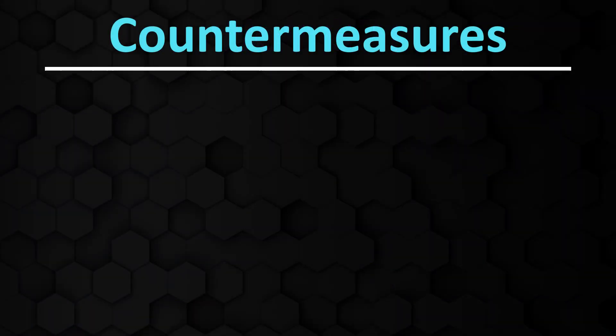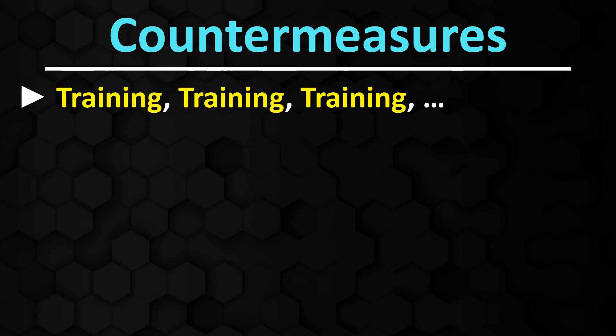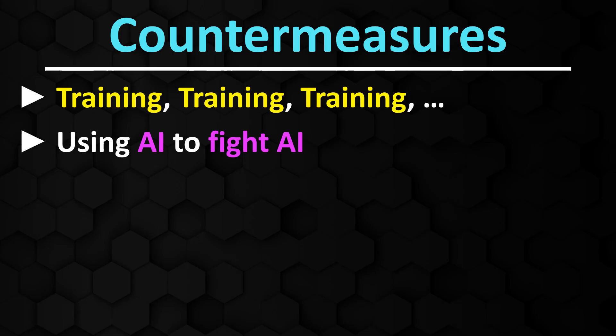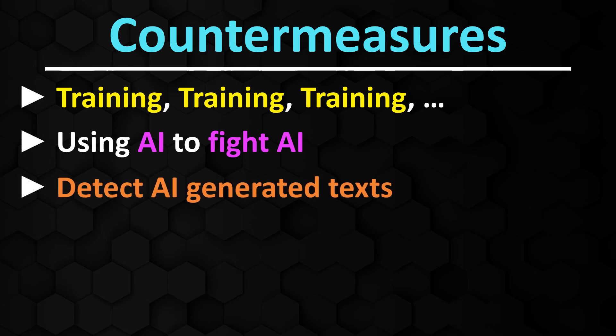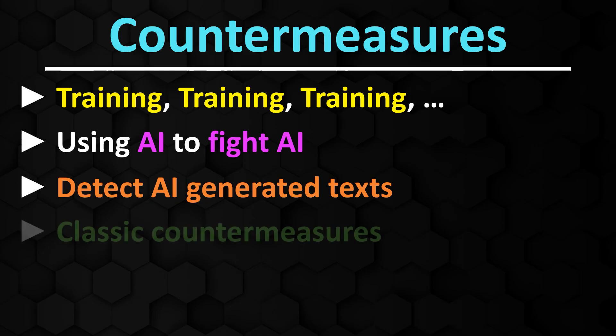But how can you protect against attacks conducted with the help of malicious AI models? Once again, the answer is training, training, and more training. Employees must be educated about the dangers posed by such AI-supported attacks. In addition, AI tools themselves can be used to detect such attacks. There are many tools that can recognize AI-generated attacks, which can help identify phishing emails generated by WormGPT or EvilGPT. And of course, security measures such as updating the software in use and deploying firewalls should be implemented.